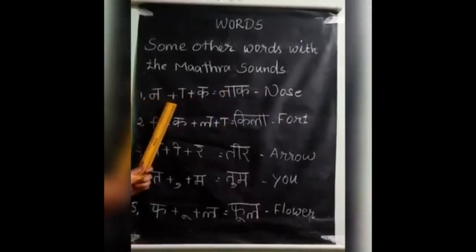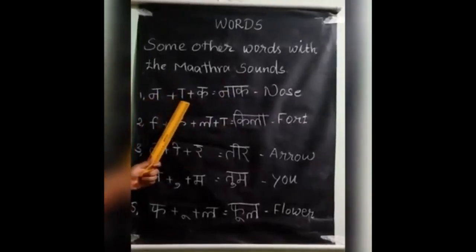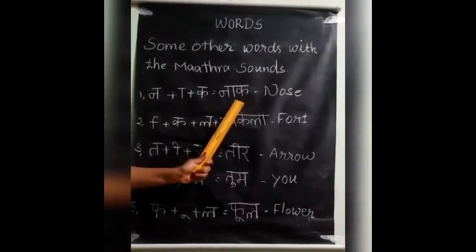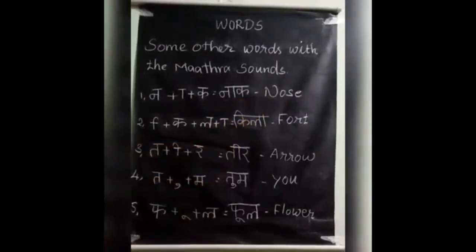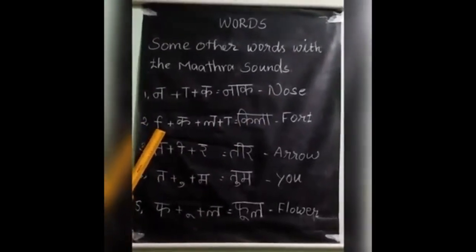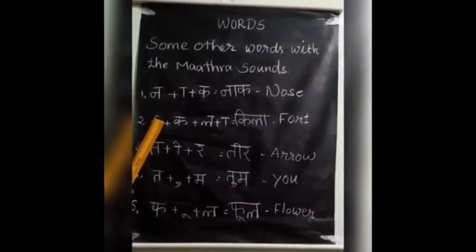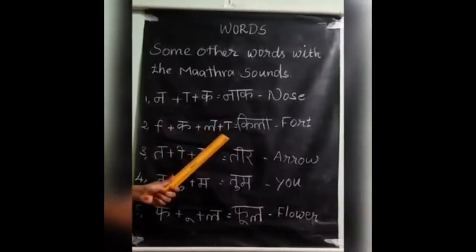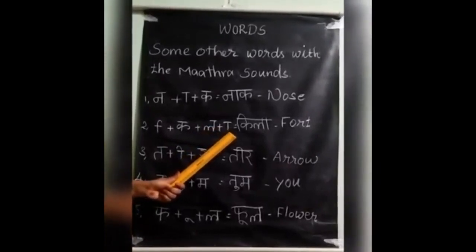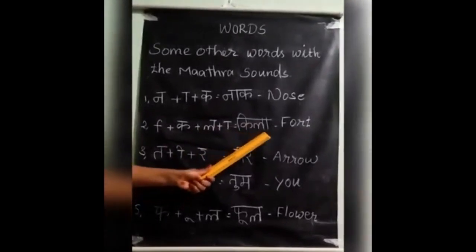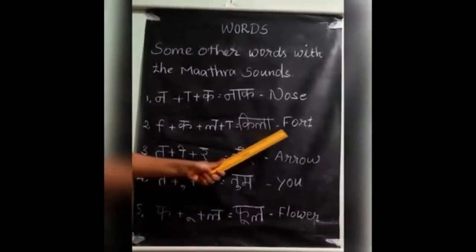Again: Na plus aaki symbol plus ka is equal to naak. Naak means nose. Next one — eeki madra ka symbol plus la. Naak plus aaki madra symbol. Khila. Khila means fourth.